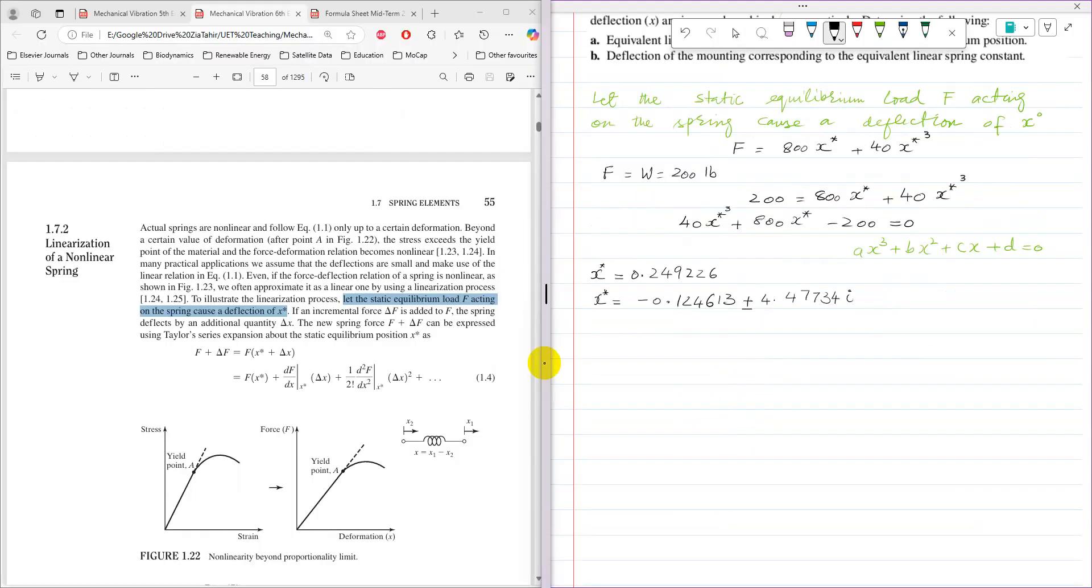Now after solving using calculator, the value of x* comes as 0.249226 and the other two values are complex values. These values are not valid, so I am going to use only valid value of x* which is 0.249226.